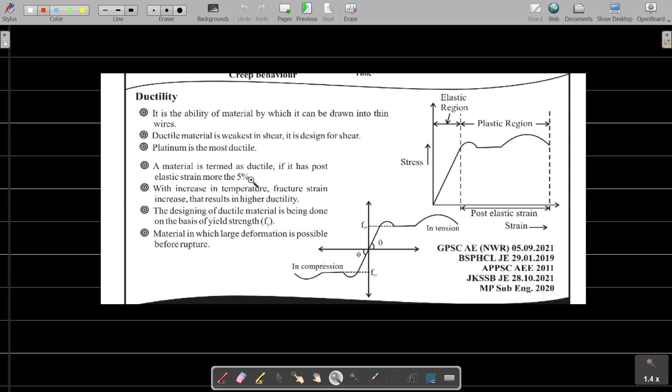Ductility is the ability of material by which it can be drawn into thin wire. Ductile material is weak in shear. Platinum is the most ductile material. Material is considered ductile if it has post elastic strain more than 5%. When temperature increases, ductility increases. Designing of ductile material is done on the basis of yield strength, FY value. In ductile material, large deformation is possible before failure.